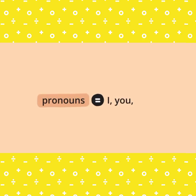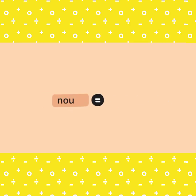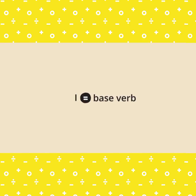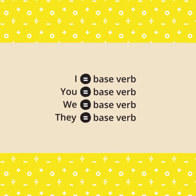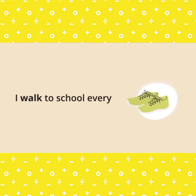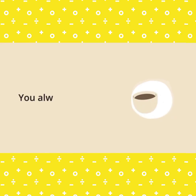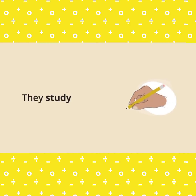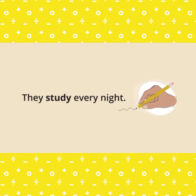The subject can be a pronoun or a noun. We use the base verb when the subject pronoun is I, you, we, or they. For example: I walk to school every day. You always drink coffee. We sometimes eat dessert. They study every night.